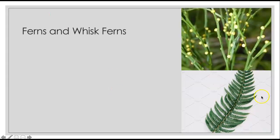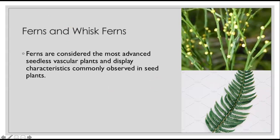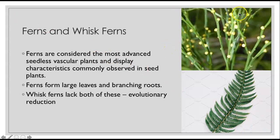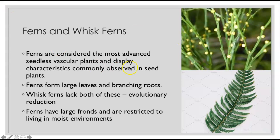Ferns are considered the most advanced seedless vascular plants, displaying characteristics commonly observed in seed plants, but they are not seed plants. Ferns form large leaves and have branching roots. Whisk ferns lack both of those, which is an evolutionary reduction — somewhere along the line they shared these characteristics but evolved to lose them. Ferns have large fronds and are restricted to living in moist environments. With that, we've gone through the seedless non-vascular and the seedless vascular plants. Let me know if there are any questions, and I'll see you in the next lecture.